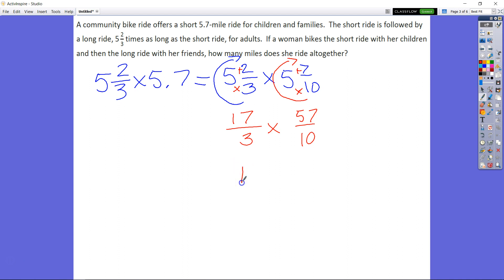And then we had 5 and 7 tenths: 10 times 5 plus 7 equals 57 tenths. So now with this, I could use my cross cancellation. I know that 3 divided by 3 is 1, and 57 divided by 3 is going to be 19. Now I have 19 times 17 and 1 times 10. So I know that's going to be 10 in my denominator. Now I have to find out what 17 times 19 is.